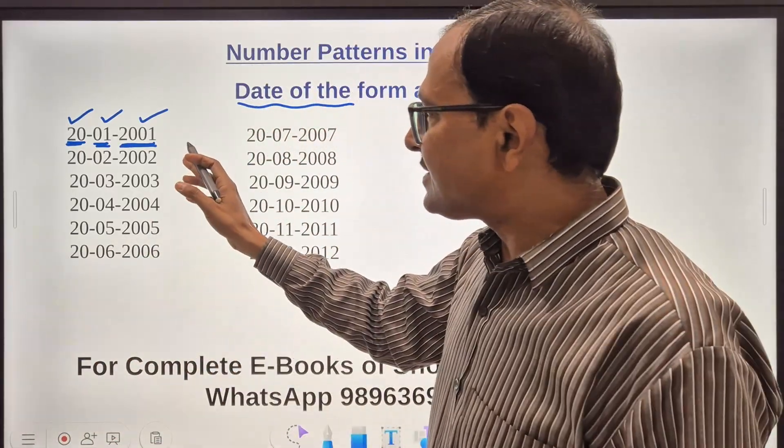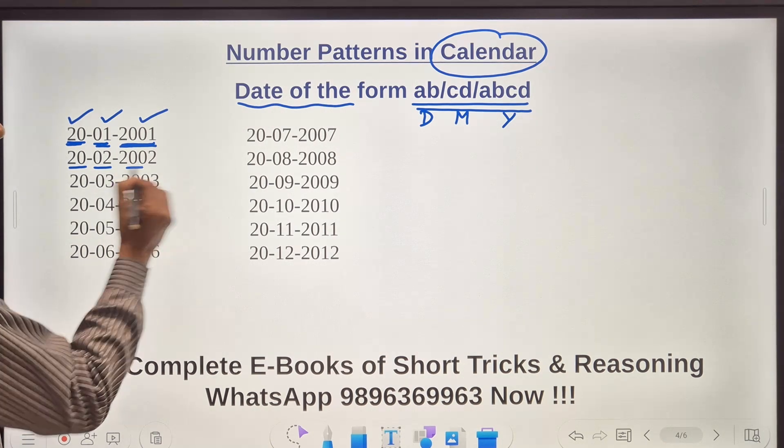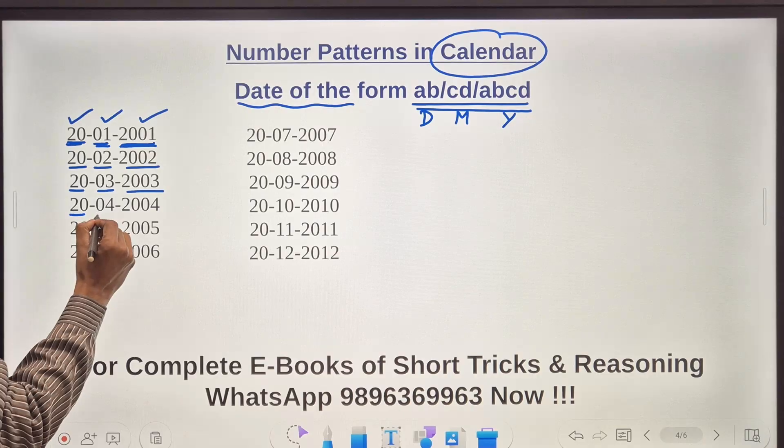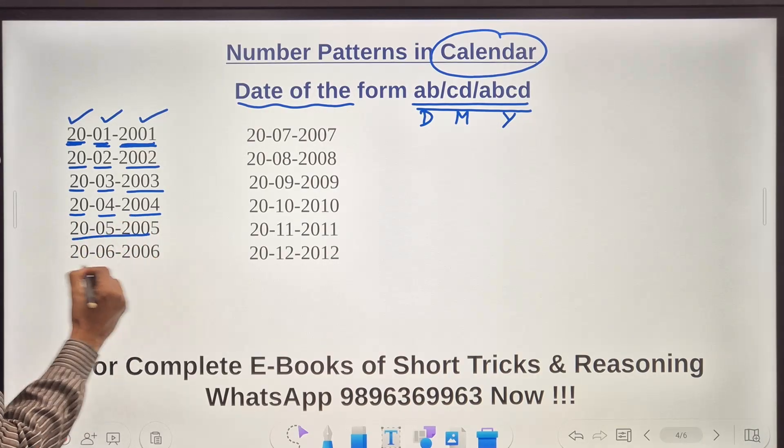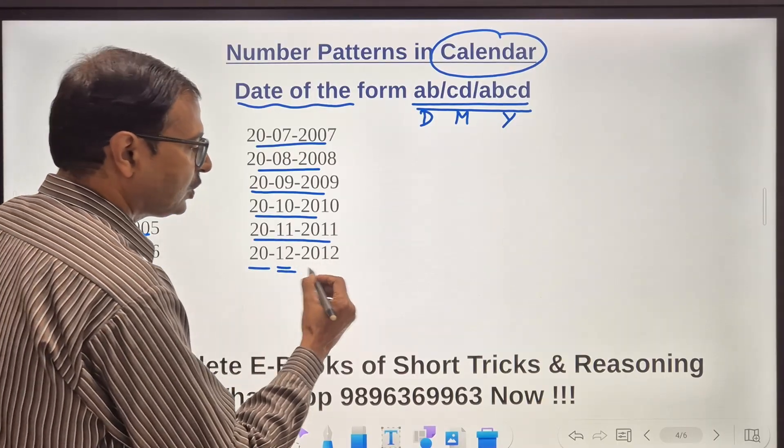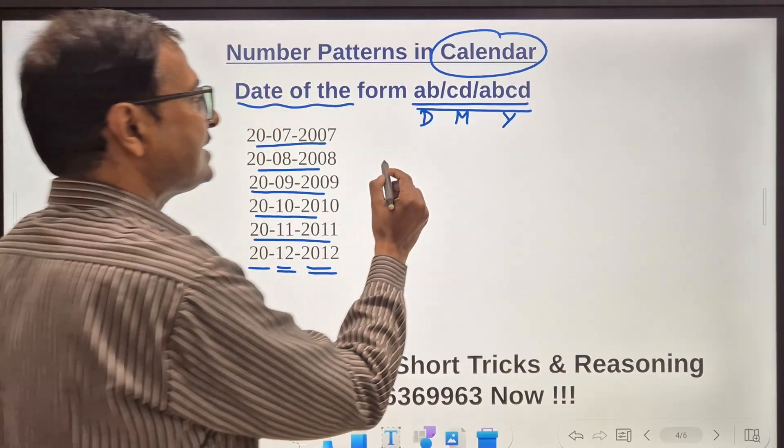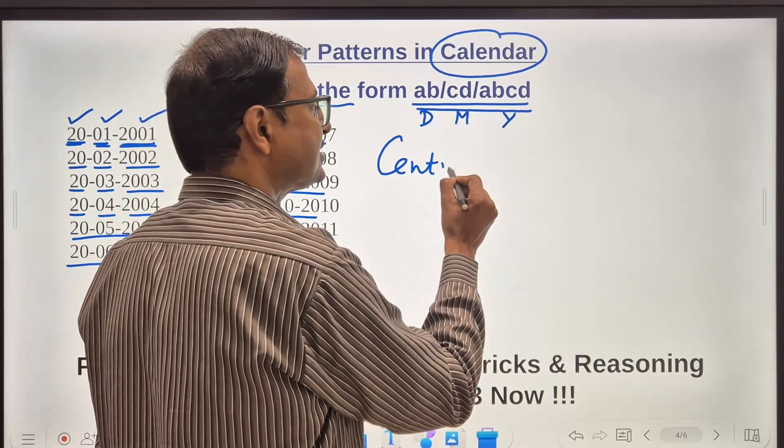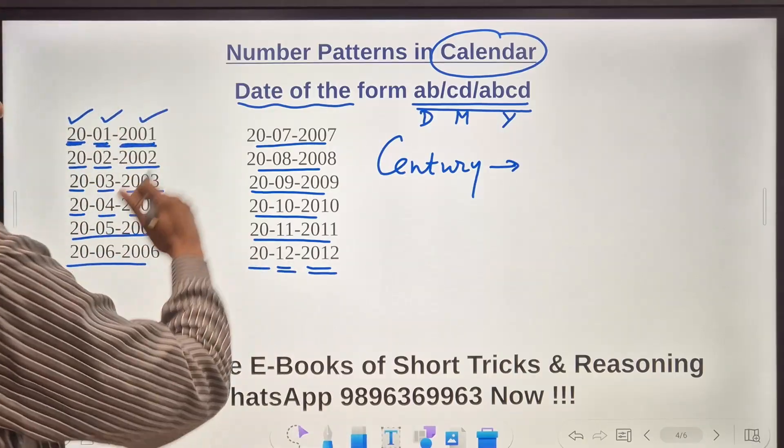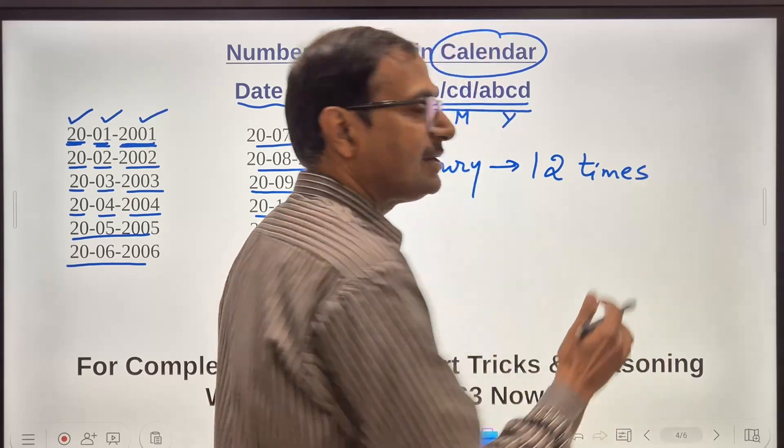So how many times do you think this will happen in a particular century? Can we replace the 1 by 2 here? So if you replace the 1 by 2, 20th February 2002, 20th March 2003 and then 20th April 2004. Similarly you can carry on like this and at the end you will get 20th December 2012. So how many times in a century are you going to get this kind of a date AB/CD/ABCD? It is 6 plus 6, 12 times this is going to happen in a century.